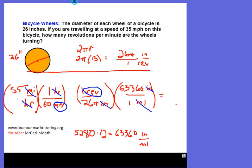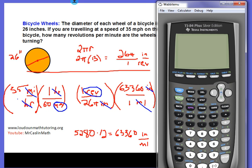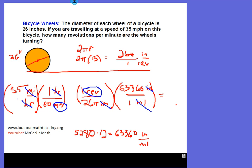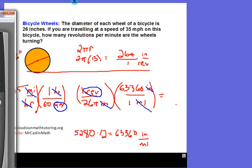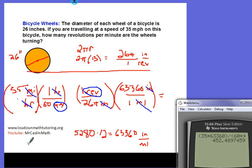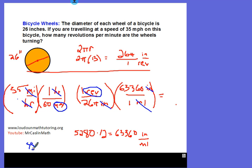When we're left, basically it's just, you're using your calculator. So you're going to take everything on top, 35 times 63,360, and divide it by everything on the bottom, which is 60 times 26 pi. When you do that, you're going to get 452.5. 452.5 what? Remember, it's what's the units that are left, revolutions per minute.